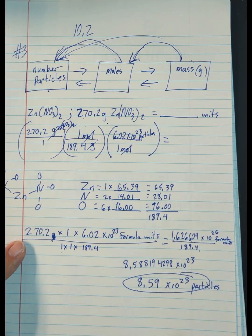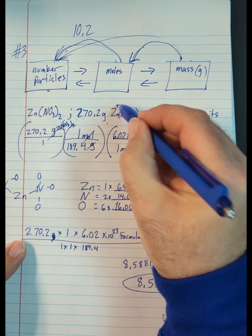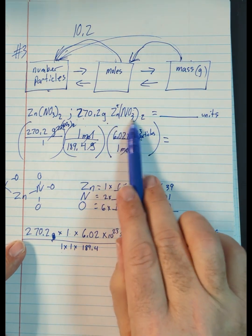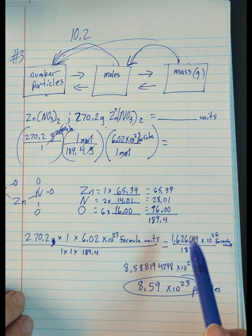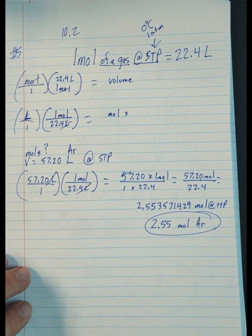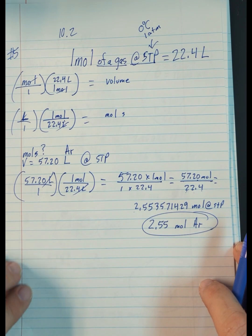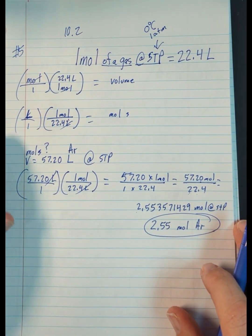Remember, covalent compounds form molecules, but ionic compounds form formula units. Zinc nitrate is ionic because zinc is positive and nitrate is negative. Ionic compounds form formula units — it's like a molecule, but they don't call it a molecule.